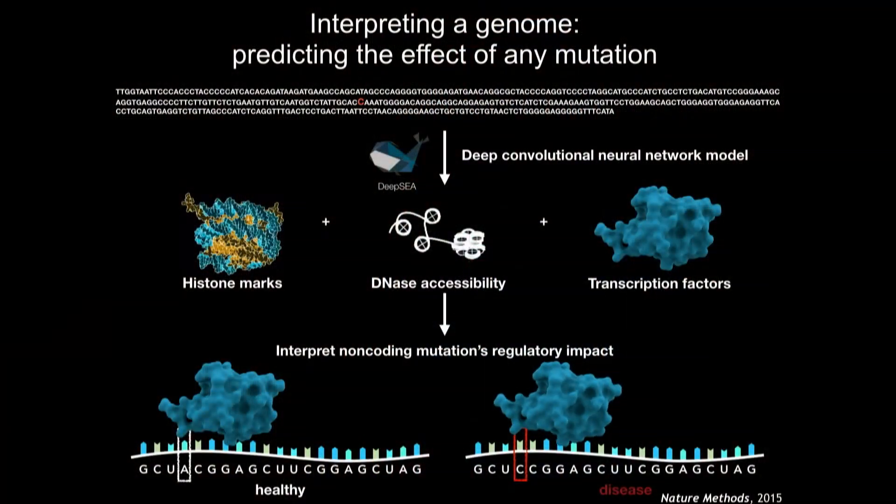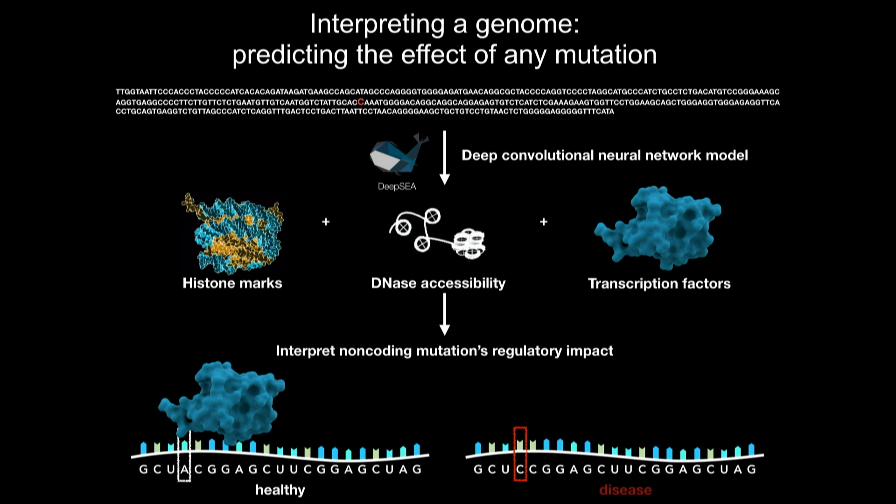So even if we sequenced every person on earth and had lots of information about their clinical status and disease risk, we still wouldn't have enough data to do this association. Instead, we turn to deep learning models and try to learn along the genome — looking along the 3 billion letter-long sequence at the many examples of specific biochemical signals that underlie the regulatory capacity to turn genes on and off. This regulatory model, DeepC, is then able to predict for any change — like the C shown in red, a change from A to C in that location — the specific biochemical consequences that cause a gene to potentially not be expressed when it should have been.